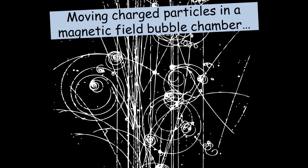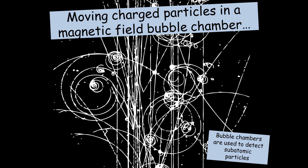Here we can see an example of charged particles moving in a magnetic field in a bubble chamber. And as they move, you can see some of them are spiraling clockwise and some are spiraling anticlockwise. We're going to discuss why this effect happens. And bubble chambers are used to detect subatomic particles.